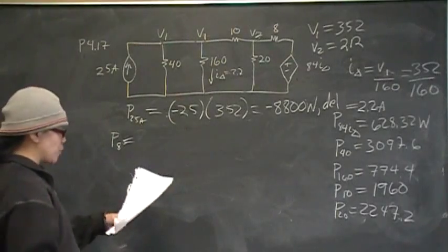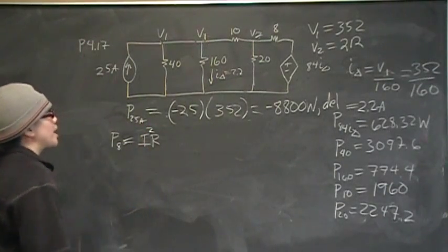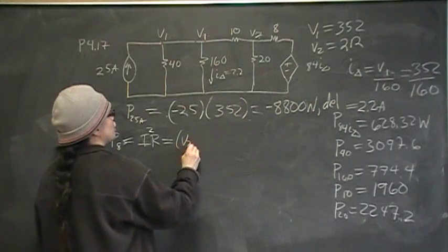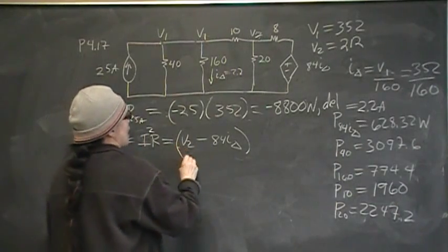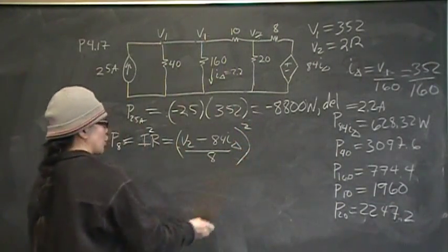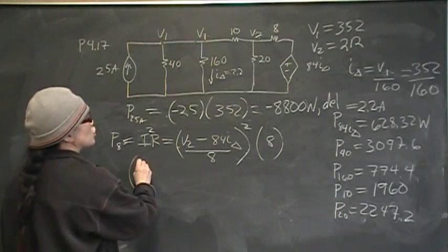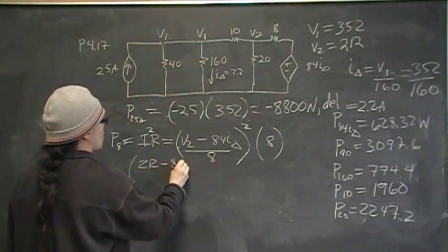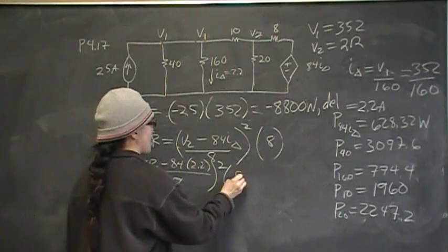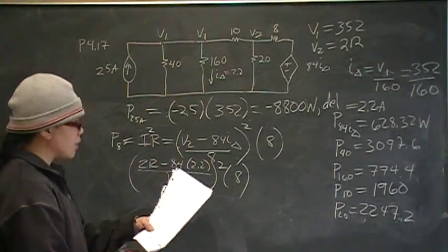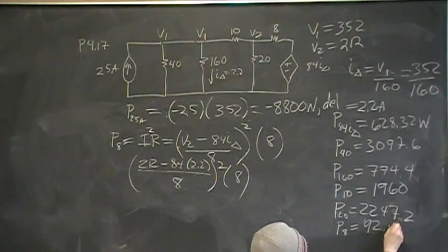Now P8. Power absorbed by the 8 ohm resistor is going to be I squared R. So P is equal to I squared R. I is V2 minus 84 I delta over 8. Square that. That's the current through that 8 ohm resistor. And then R is 8. So this works out to be 212 minus 84 times 2.2 amps over 8. Square all of that times 8. That will give you 92.48. So P of 8 is equal to 92.48.